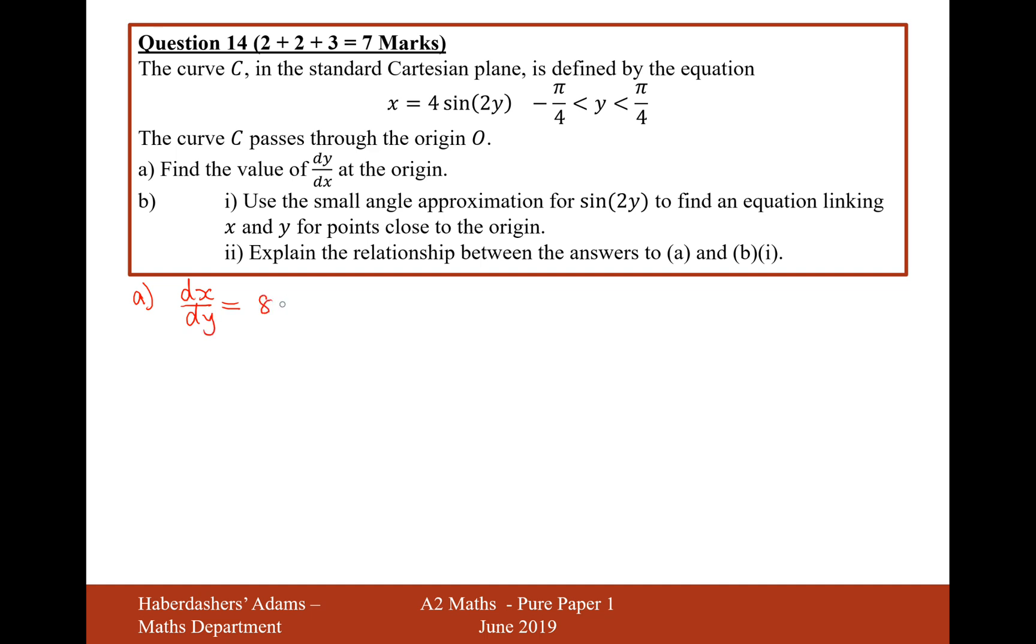So that's going to be 8 cos 2y. Therefore, dy by dx is just going to be 1 over 8 cos 2y. And I know that's at the origin, which has coordinates of 0 for both x and y. So I'm now going to substitute in y equals 0. The gradient there is going to be 1 over 8, because cos of 0 is 1, so it's 1 over 8.